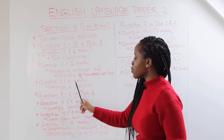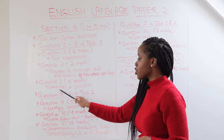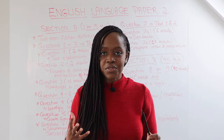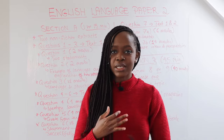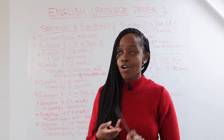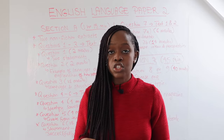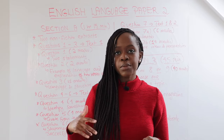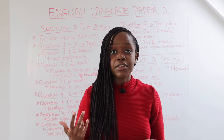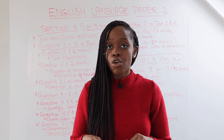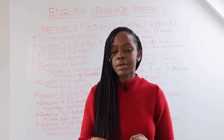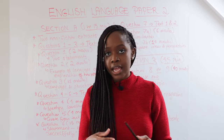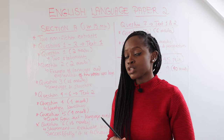Question three is worth 15 marks and is a language and structure question. Language includes alliteration, metaphors, similes, onomatopoeia, and personification. Structure refers to how a text begins versus how it ends, and also includes interesting punctuation — not full stops or commas, but things like ellipsis and asyndeton. You need to make points related to both language and structure.